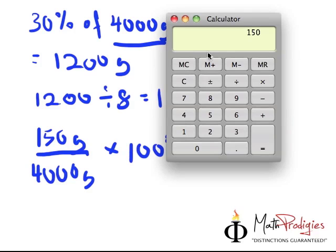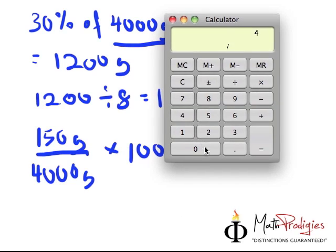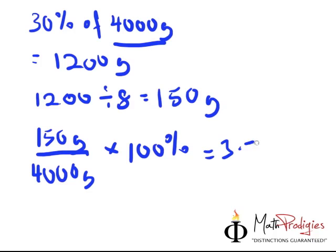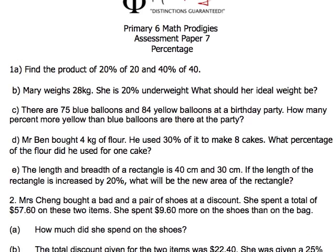So, 150 divided by 4,000 grams times 100%. So, 150 divided by 4,000 times 100, which will give you the same answer of 3.75%. So, if you did it by the first way, I'm going to give you a big high five because you are a math prodigy. Good job. So, and that is it for part D. Very simple.